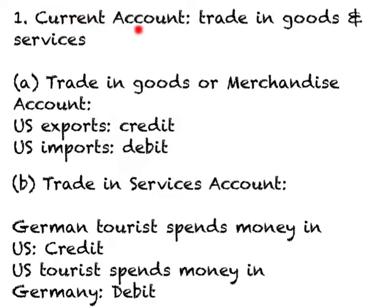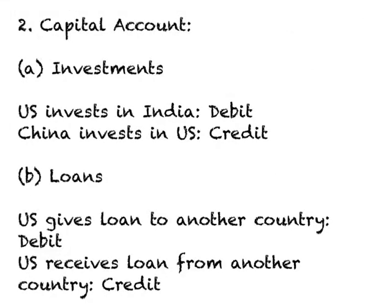You should be able to identify credit as well as debit side entries. The current account is made up of two sub-accounts: trade in goods (merchandise account) and trade in services account. Any of these sub-accounts can be in surplus, in deficit, or in balance. The second sub-account of BOP is the capital account, which is again made up of two parts: investments and loans.